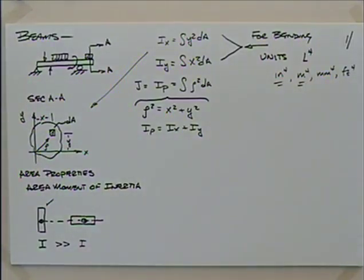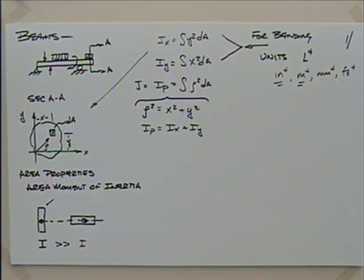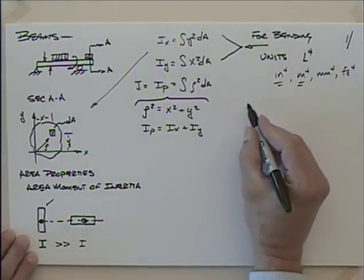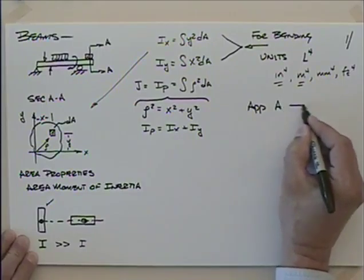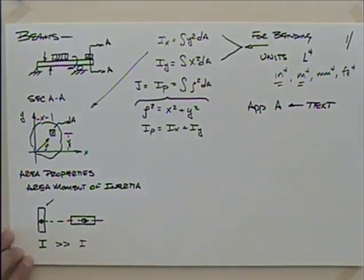Inches to the fourth or meters to the fourth are definitely the most common. Remember last term in dynamics we talked a little bit about not area moments of inertia, but mass moments of inertia, describing how the mass was distributed about some axes. Sometimes those are a little bit confusing because people just say moment of inertia. You'll look at it in context: if we're talking about dynamics and rotating things, it's probably mass moment of inertia; if we're talking about beams, it's probably area moment of inertia. But the units are always a dead giveaway — distance to the fourth is area moment of inertia, mass times distance squared is mass moment of inertia. Appendix A in your textbook covers this, as well as a dedicated chapter in the statics textbook from fall term.